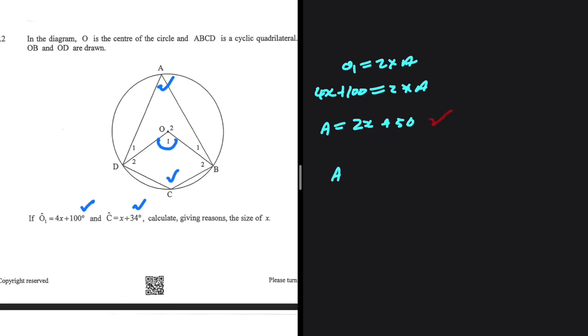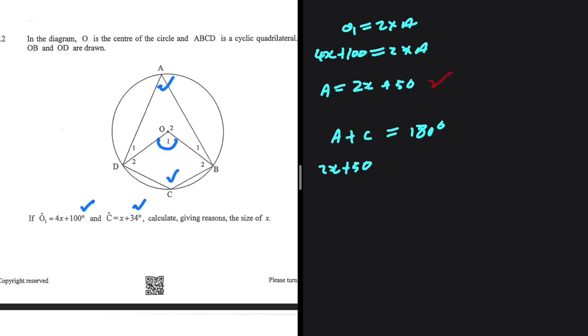So what am I proposing? I'm proposing that A plus C should give me 180 degrees—the opposite angles of a cyclic quad are supplementary. So in place of A, I have 2x plus 50; in place of C, I have x plus 34 equals 180 degrees.